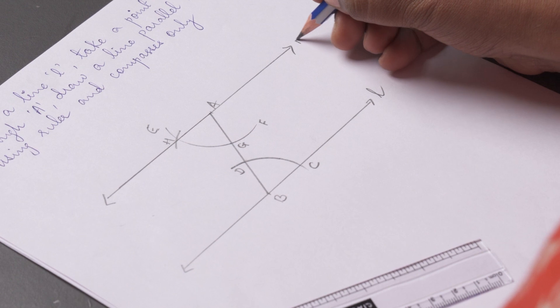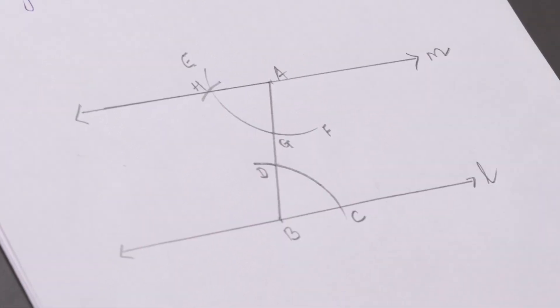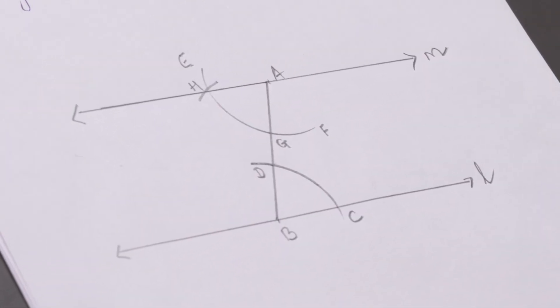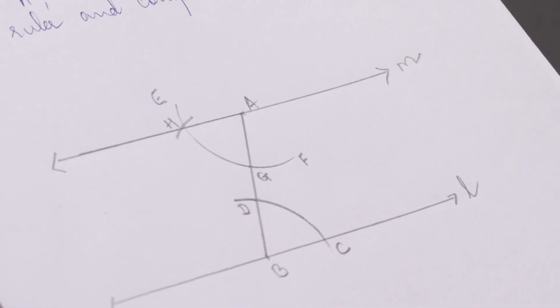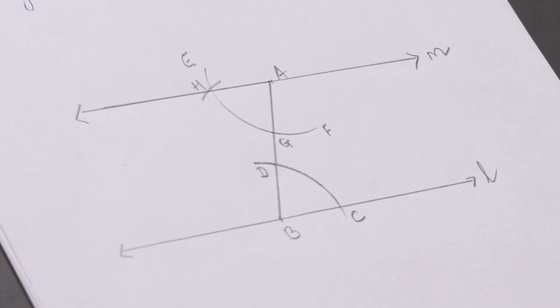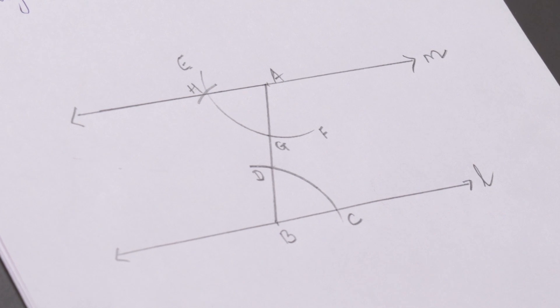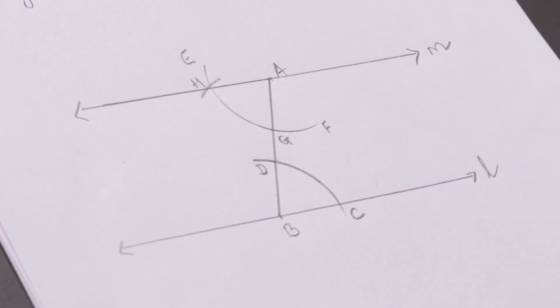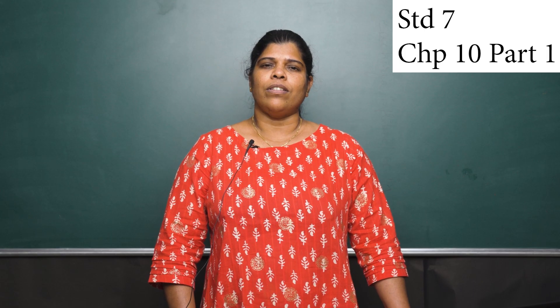Now, if you see in the figure, angle ABC and angle BAH are alternate interior angles, and therefore line L is parallel to line M.